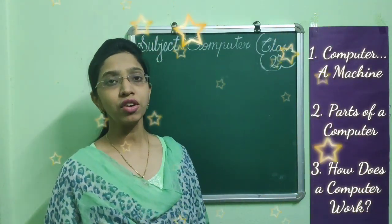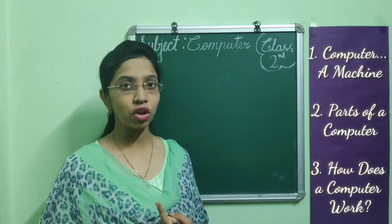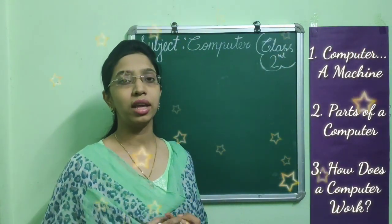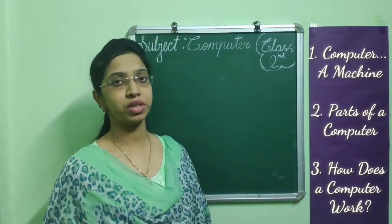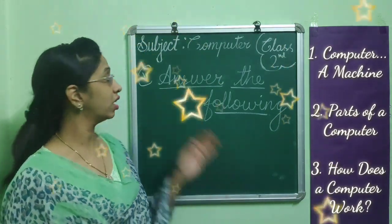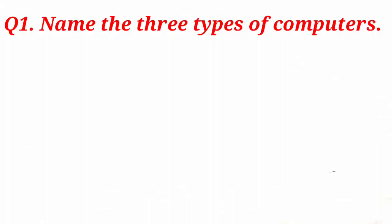Today we will recall the next two bits: answer the following and draw and label the parts of computer from these three chapters. Let us start with the fifth bit, answer the following. Question number one: Name the three types of computers.